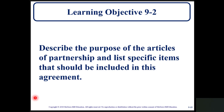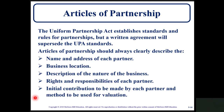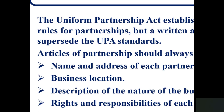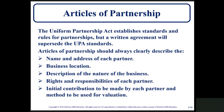Learning objective 9-2: describe the purpose of the Articles of Partnership and list specific items that should be included in this agreement. The Uniform Partnership Act establishes standards and rules for partnerships, but a written agreement will supersede the UPA standards. The Articles of Partnership should always be clearly described and should include the name and address of each partner, business location, description of the nature of business, rights and responsibilities of each partner, initial contribution to be made by each partner, and a method to be used for valuation.